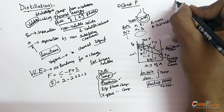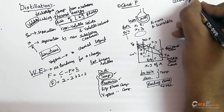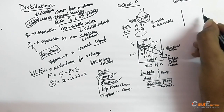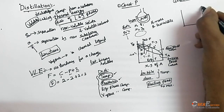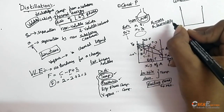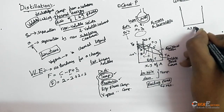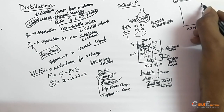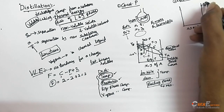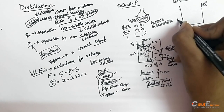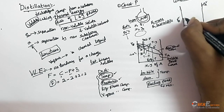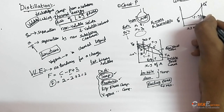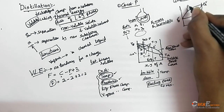Similarly, taking constant temperature, I plot pressure versus composition. Since A is more volatile, the vapor pressure of A is higher than that of B. Taking the data and drawing the curves, the P versus y line represents the vapor phase and the P versus x curve represents the liquid phase.